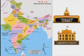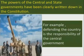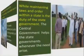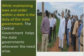At the state level, the legislative assembly and the legislative council are the lawmaking bodies. The powers of the central and state governments have been clearly written down in the constitution. For example, defending the country is the responsibility of the central government, while maintaining law and order within a state is the duty of the state government.